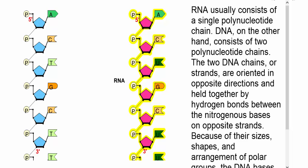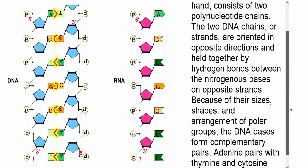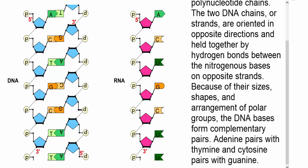RNA usually consists of a single polynucleotide chain. DNA, on the other hand, consists of two polynucleotide chains. The two DNA strands are oriented in opposite directions and held together by hydrogen bonds between the nitrogenous bases on opposite strands. Because of their sizes, shapes, and arrangement of polar groups, the DNA bases form complementary pairs: adenine pairs with thymine, and cytosine pairs with guanine.